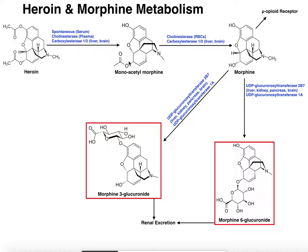Monoacetyl morphine will also eventually lose its second acetyl group, but that has to be catalyzed by enzymes — for example, cholinesterases in the blood such as on red blood cells, and carboxylesterases 1 and 2, which are present in the liver and brain respectively. When you lose the second acetyl group that gives you morphine, which is then able to bind to the mu opioid receptor, the primary opioid receptor that morphine acts on.